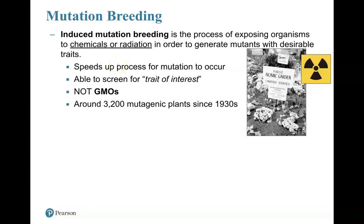The process is: we get a mutant with a trait we want, and we decide we like that mutant. We then take it and make offspring. That's called mutation breeding.